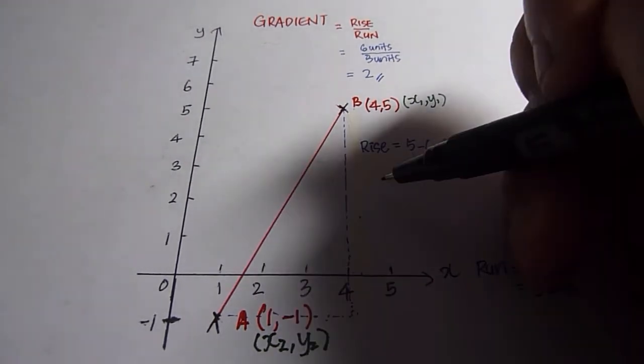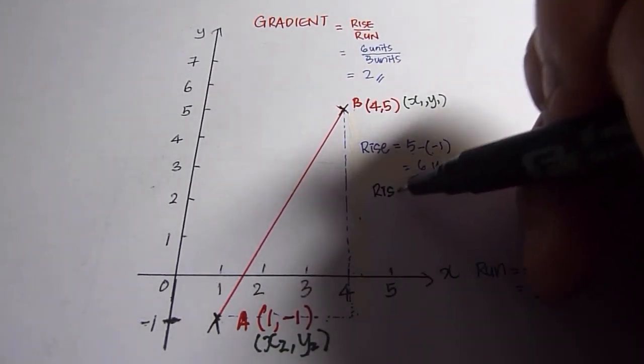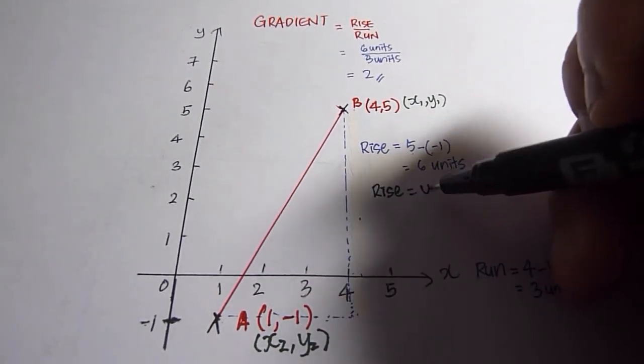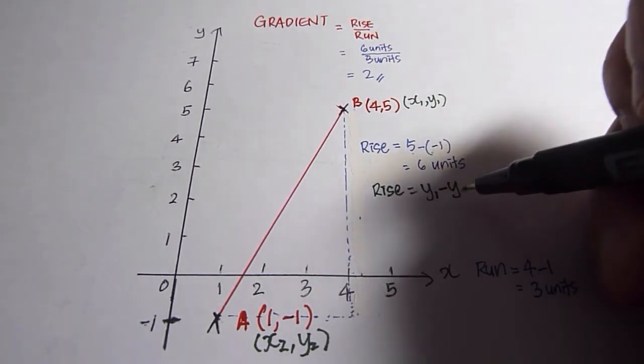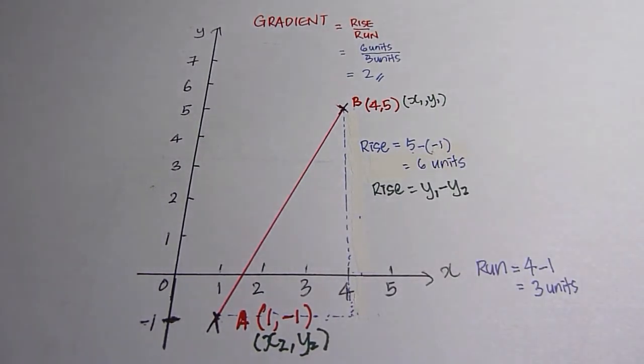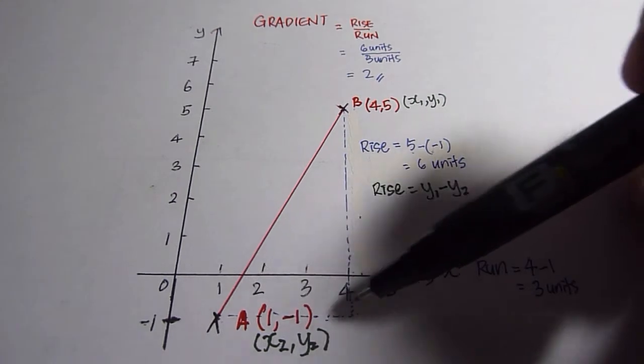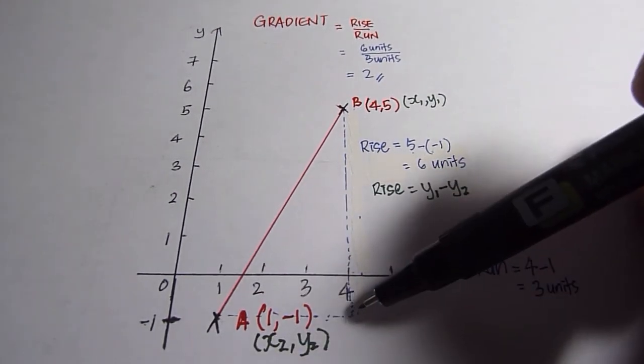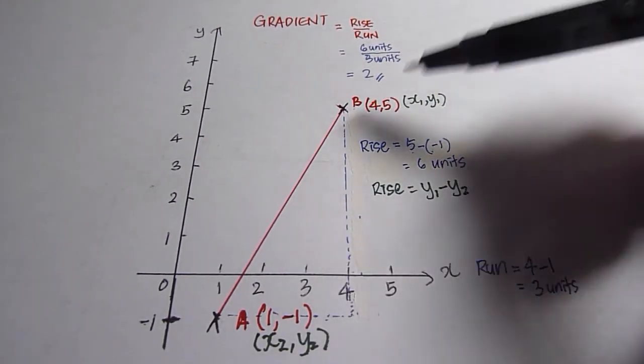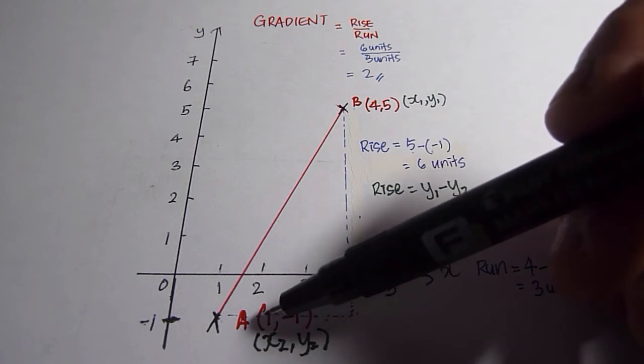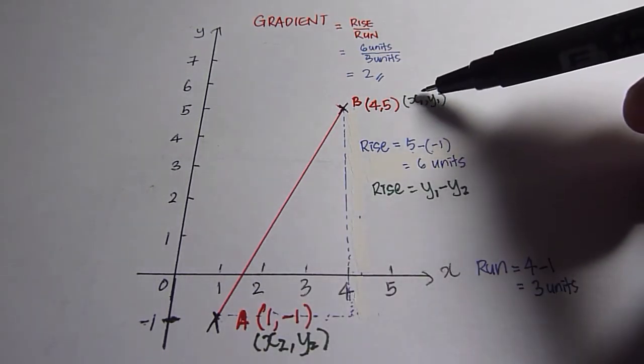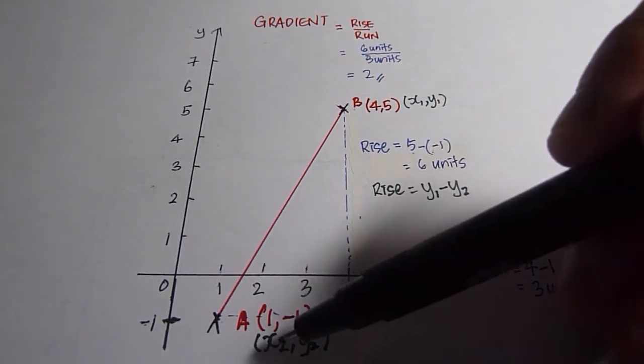So, rise can be written as y1 minus y2. Similarly, for the horizontal distance, that's the run, we took 4 minus 1 just now. So, now, the equivalent would be x1 minus x2.